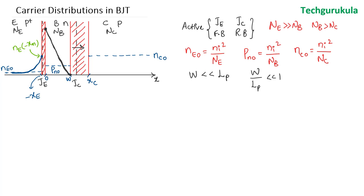At the collector junction, which is reverse biased, current flows due to minority carriers. The minority carriers in the base — holes — are already accounted for as I_CP. The remaining current, I_CN, is due to minority electrons in the collector crossing the depletion region. The electron concentration is zero at the junction boundary and varies accordingly. This gives us all minority carrier distributions in emitter, base, and collector.